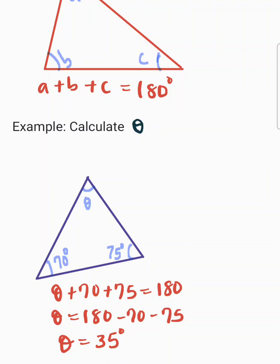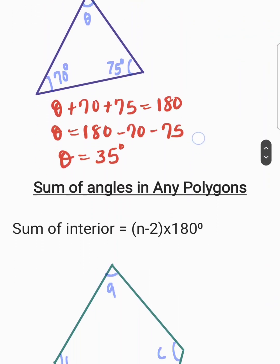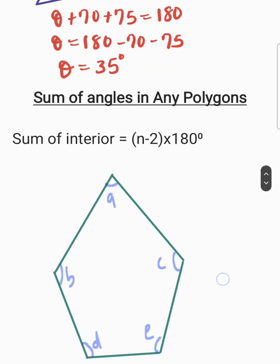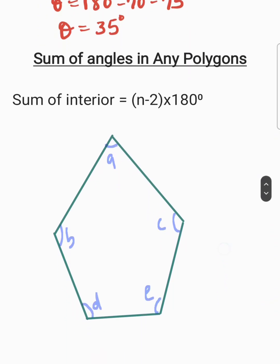That is the application of the first rule. Now let's look at the second rule, which says that the sum of interior angles of any polygon is given by n minus 2, multiplied by 180 degrees.